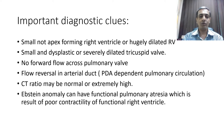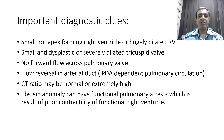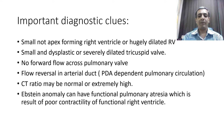Important diagnostic clues are: a small, non-apex-forming right ventricle, or very occasionally a dilated right ventricle; a small, dysplastic, or occasionally severely dilated tricuspid valve; and most importantly, no forward flow across the pulmonary valve. As there is no forward flow in the pulmonary valve, there is flow reversal in the arterial duct — making it a PDA-dependent pulmonary circulation. Cardiothoracic ratio may be normal or extremely high in rare cases.